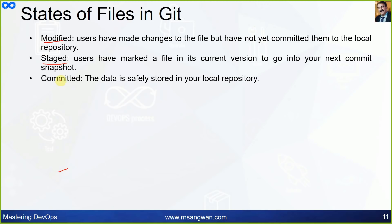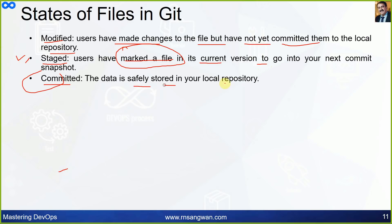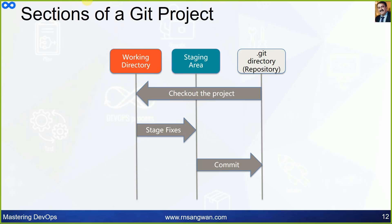There are three states of files in Git: modified, staged, and committed. Modified means users have made changes to files but have not yet committed them to the local repository. Staged means the file has been marked in its current version to go into the next commit snapshot — it is ready. Committed means the data is safely stored in your local repository.